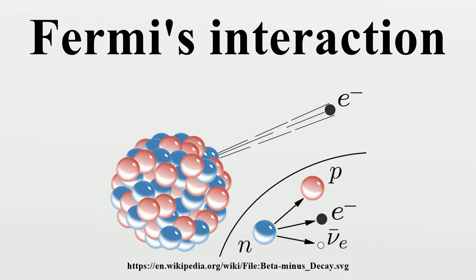Unfortunately, the calculated cross-section grows as the square of the energy, making it unlikely that the theory is valid at energies much higher than about 100 GeV. The solution is to replace the 4-Fermion contact interaction by a more complete theory — an exchange of a W or Z boson as explained in the electroweak theory.